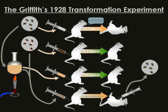Griffith injected the different types of pneumonia into mice. When he injected type S into a mouse, it died. When he treated type S and put it into a mouse, it lived. When he put in type R, the harmless type, into a mouse, it also lived. However, when he made a mixture of live R and dead S, the mouse died.